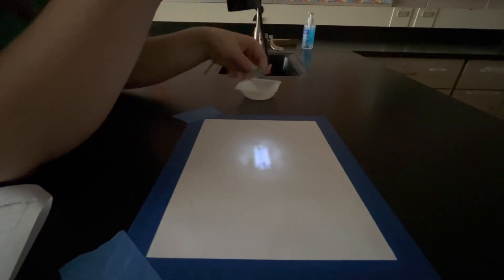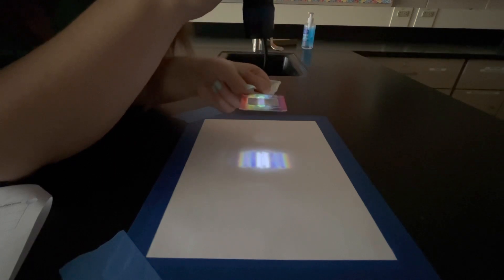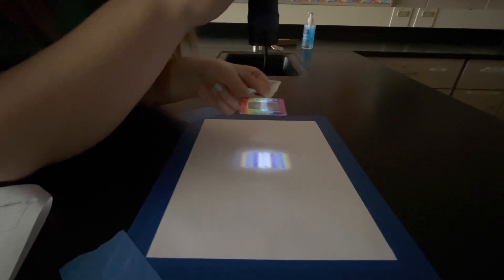We will first take the diffraction lens and place it horizontally between the light and the screen. Record your observations of what happens to the light as it transmits onto the screen.